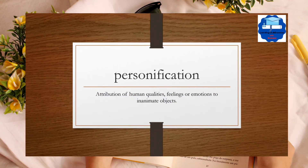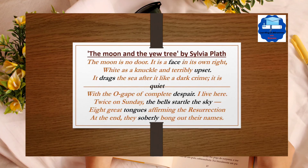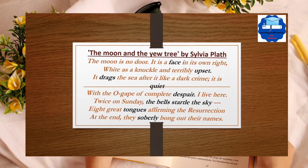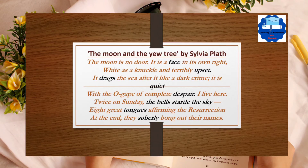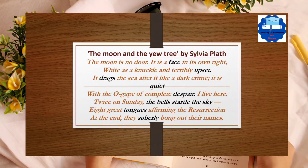Personification is an attribution of human qualities, feelings, or emotions to inanimate objects. Sylvia Plath in her poem 'The Moon and the Yew Tree' has used this technique very impressively. She has given the qualities and feelings of human beings to the moon — that cannot think, that cannot be upset, that cannot drag the sea, that cannot be quiet, that cannot despair, or that cannot be sober. She has used this technique in these verses very beautifully.